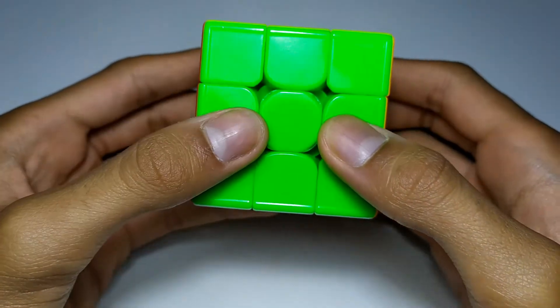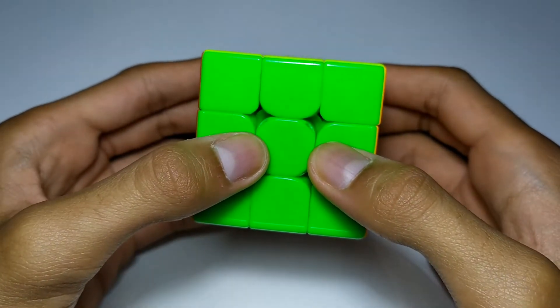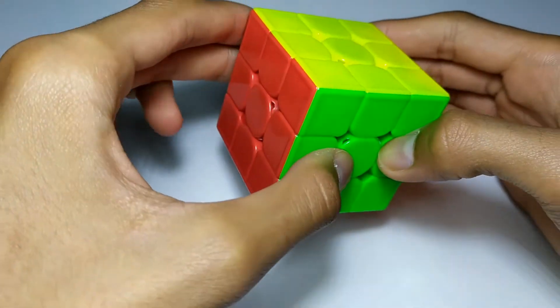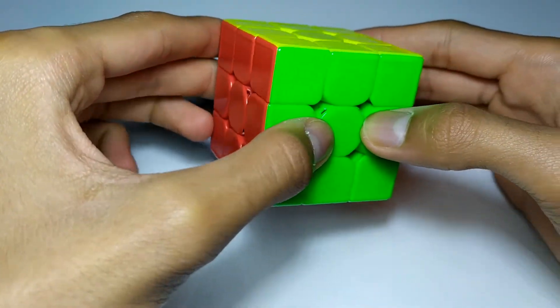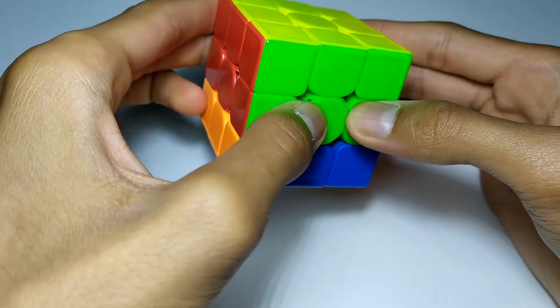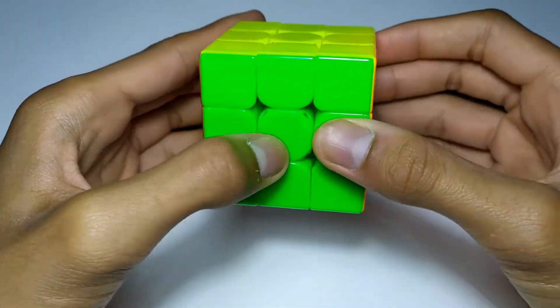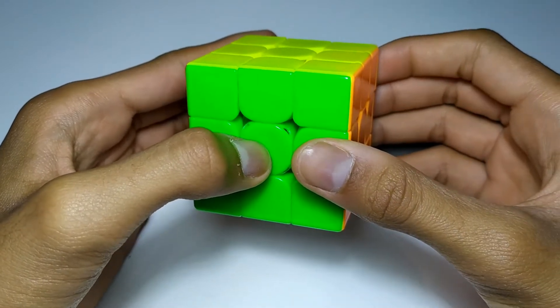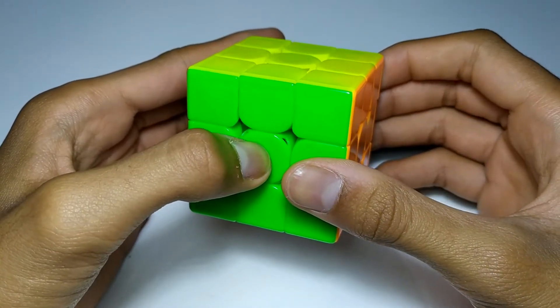Before we start though there is an important finger trick that you need to know that is crucial to making sure you can do this algorithm quickly and it's the D' push with your left hand. This move will be used a lot during the E-perm so make sure you can do it very quickly. If you can do that then we're ready to learn the algorithm so let's get started.